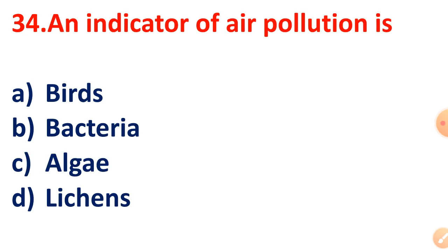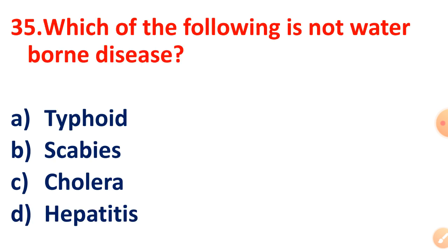Question 34: An indicator of air pollution is what? The answer is Lichens. Question 35: Which of the following is not a water-borne disease? The right answer is Scabies.